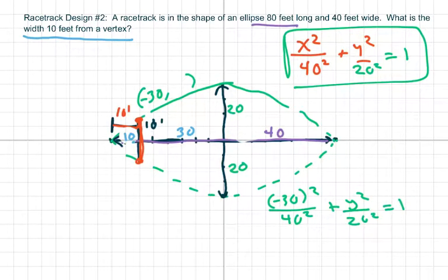So we have negative 30 squared over 40 squared plus y squared over 20 squared equals 1. And we're solving for our y here, for this point here, because you're trying to find this width here. 10 feet from the vertex. And this, what they mean is the vertex is right here. These are the two vertexes.